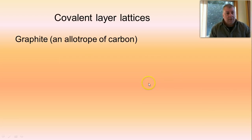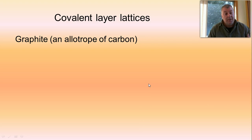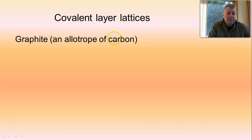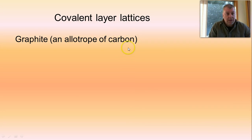There's pretty much only one example of covalent layer lattices we'll talk about, and that's graphite. If you learn the properties of graphite, you can recognize a covalent layer lattice. It's an allotrope of carbon, meaning it's made up of pure carbon, but the carbon is arranged differently from, say, the carbon in diamond. Hence it's called an allotrope, known as graphite.